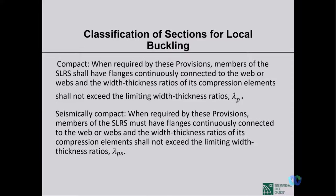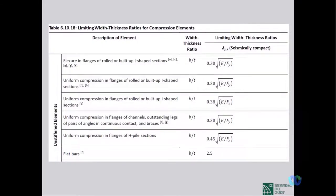The values of lambda_ps are given in BNBC Chapter 10, Section 20, Table 6-10-18 — the limiting width-thickness ratios for seismically compact sections. The table covers both unstiffened and stiffened elements.